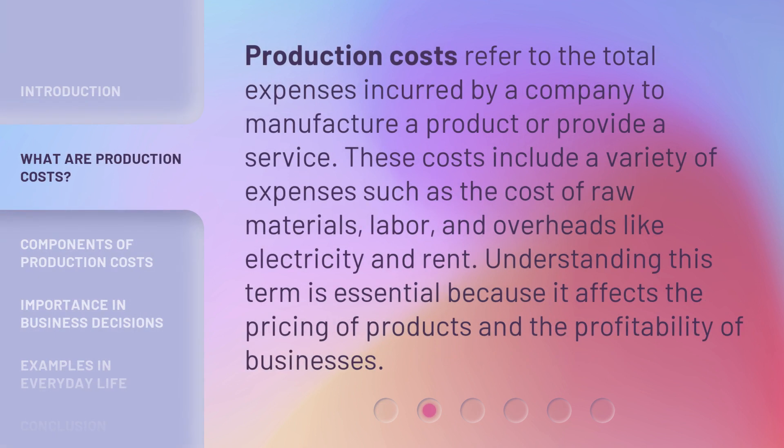Production costs refer to the total expenses incurred by a company to manufacture a product or provide a service. These costs include a variety of expenses such as the cost of raw materials, labor, and overheads like electricity and rent. Understanding this term is essential because it affects the pricing of products and the profitability of businesses.